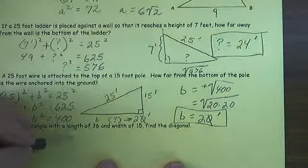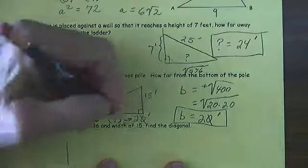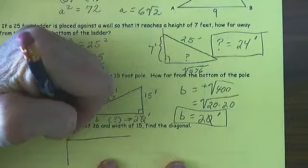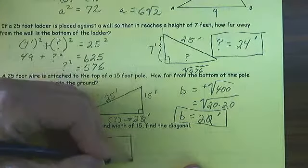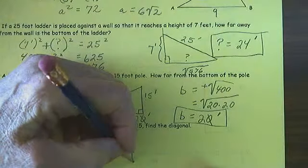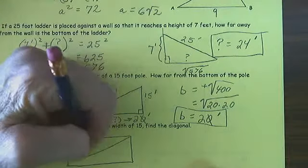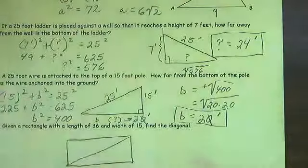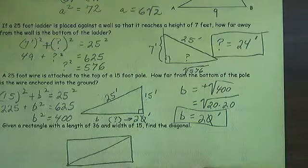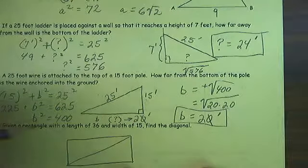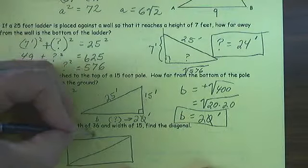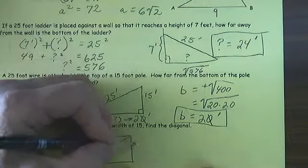Given a rectangle with length 36 and width 15, find the diagonal. I'm a little bit tired of the Pythagorean Theorem as useful as it is and as much as I like it. We have a rectangle with length 36 and width 15.